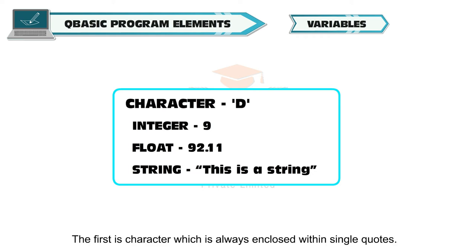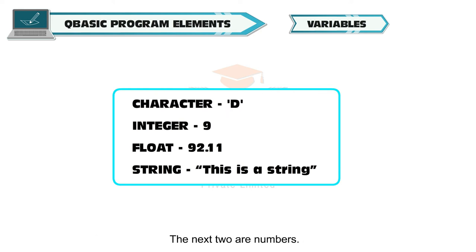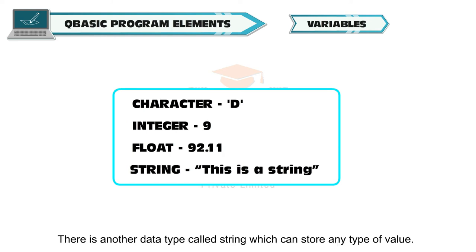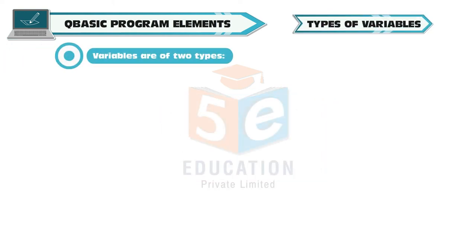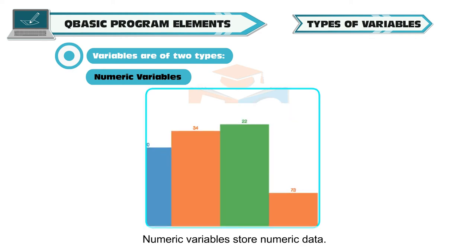Character D, Integer 9, Float 92.11, String This is a string. The first is character which is always enclosed within single quotes. The next two are numbers. There is another data type called string which can store any type of value. Variables are of two types.